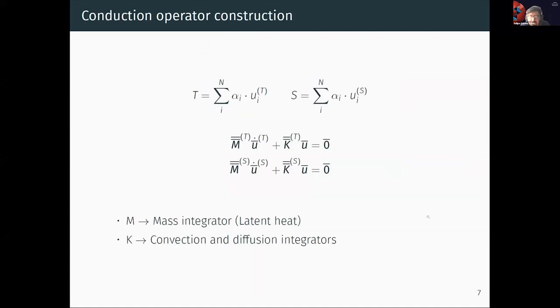For the construction of the conduction operator, we use the following function for the temperature and salinity fields, where alpha deals with the basis functions of the Sobolev space, and U are the degrees of freedom. Here, we end up with matrices with mass, convection, and diffusion integrators. It's important to denote that the latent heat term is located on the mass integrator in the temperature equations.